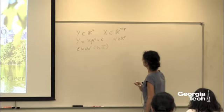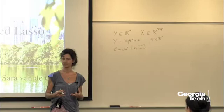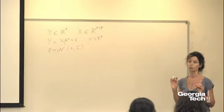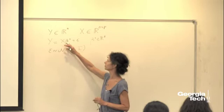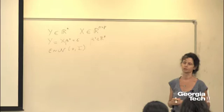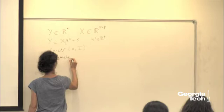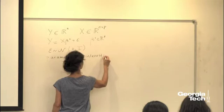Now I'm going to construct a confidence interval for a parameter of interest, a one-dimensional parameter. You can extend that to higher dimensions, and if you have very high dimensions, you might use some multiple testing technique. Let's consider a one-dimensional parameter of interest — say the first component of the vector beta. It could be any other component, so without loss of generality. For today, we assume that we are interested in estimating beta_1.